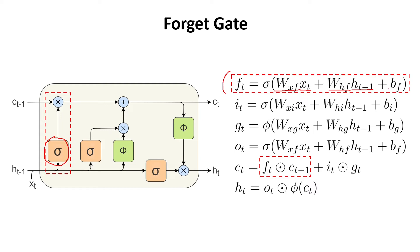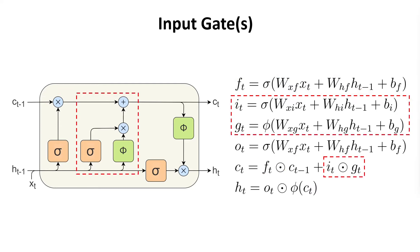We also add a bias, and very importantly we apply a sigmoid function to this result. We do that because multiplying with a sigmoid function gives us values between zero and one. When we multiply those sigmoid values with the previous cell state, we control how much of that information at each index to transfer further into the sequence. The circle with the cross symbol here represents the element-wise product of vectors.